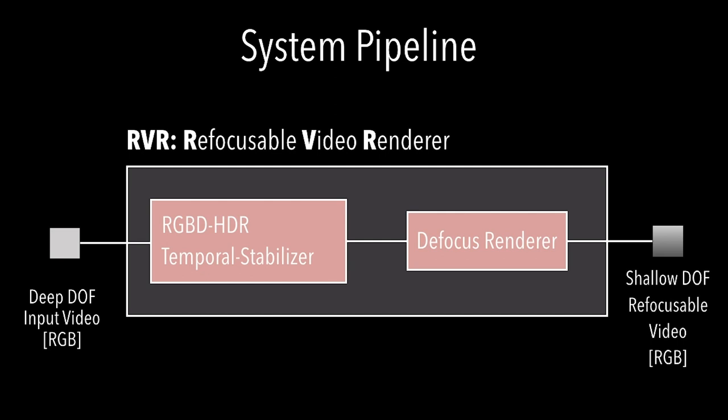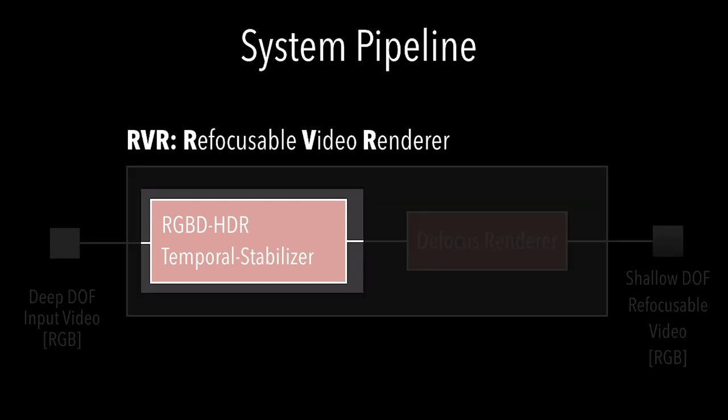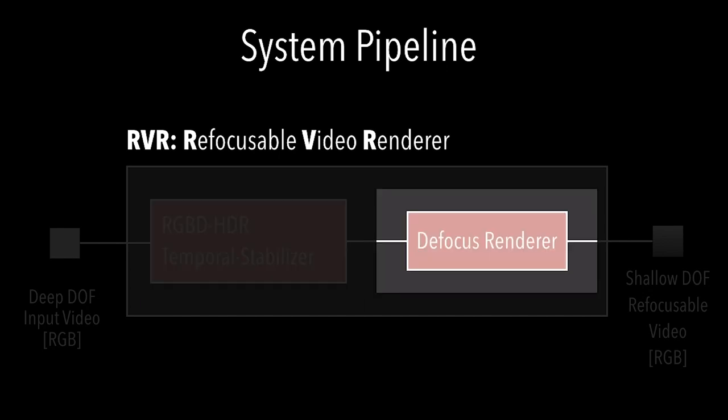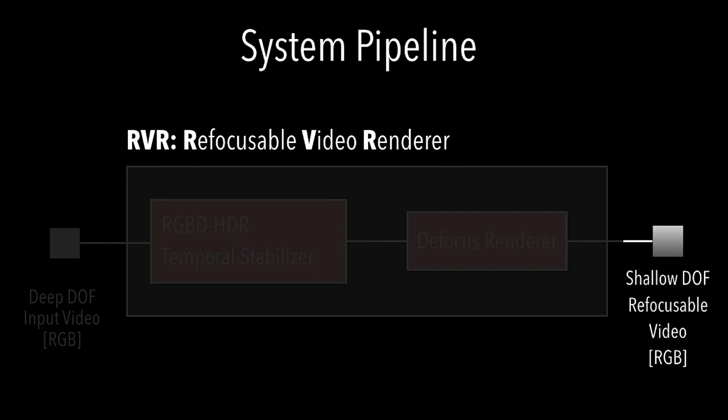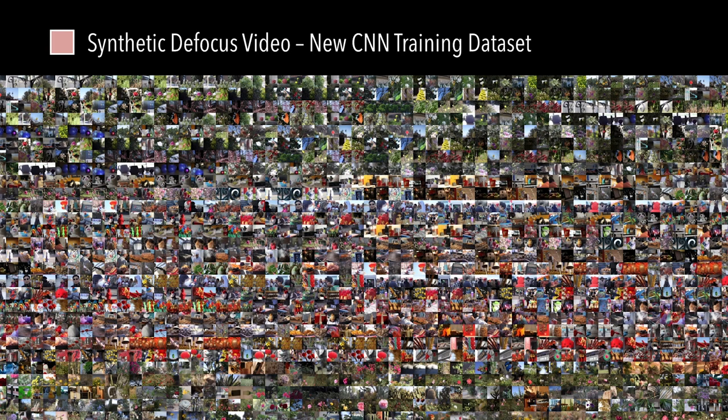This is an overview of our refocusable video renderer. We take videos with deep depth of field, such as from your smartphone, as input, and RVR generates refocusable video with shallow depth of field. First, we train a convolutional neural network to estimate depth and extended dynamic range, and apply an optical flow-based temporal stabilizer to impose temporal coherency. The defocus renderer takes an RGBD HDR video to render a shallow depth of field video. We train our custom CNN using a new, diverse database of over 2,000 sets of photos.